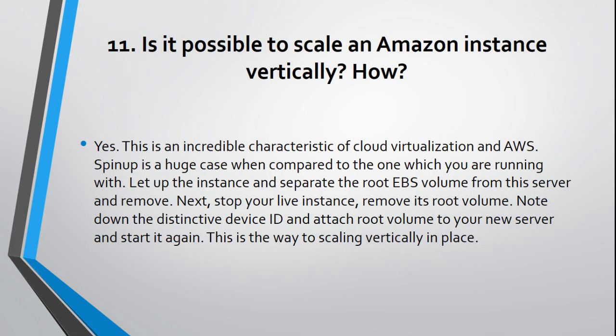Question 11: Is it possible to scale an Amazon instance vertically? How? Yes. This is an incredible characteristic of cloud virtualization and AWS. Spin up a larger instance compared to the one you are currently running. Shut down the instance and detach the root EBS volume from the server. Next, stop your live instance, remove its root volume, note the device ID, and attach the root volume to your new server and start it again. This is the way to scale vertically in place.